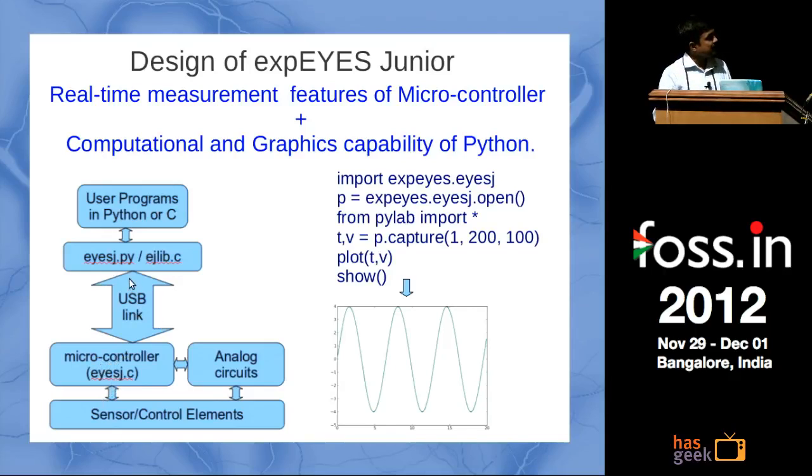The job is divided. You have a PC sitting here running programs written in Python, and all the real-time jobs are done here. You connect your sensor and control elements here. There are analog circuits and this microcontroller does the actual job and transfers the data. The plotting is done and everything is in Python, or you can do it in C as well, the library is there.